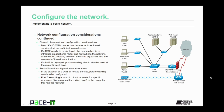Firewall placement and configuration considerations are next. Most small office and home office WAN connection devices — such as cable modems or DSL modems — include firewall services that are sufficient for small, simple networks. But if a DMZ needs to be deployed, the best method is to introduce an additional router and firewall, with the DMZ residing between the WAN equipment and the new router-firewall combination. Port forwarding should also be used at the router-firewall level — it is used to direct requests for specific resources, like a webpage request, to the computer that has that resource.